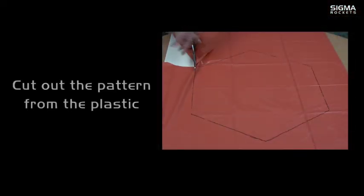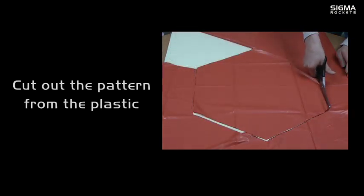Now cut the pattern out of the plastic. If you are using garbage bags, you will actually get two parachutes with one cutout.